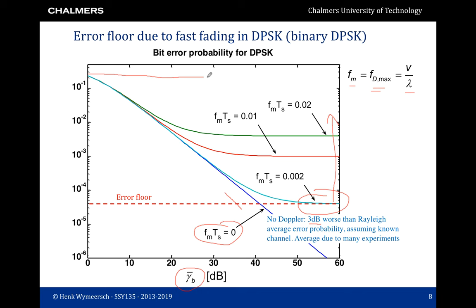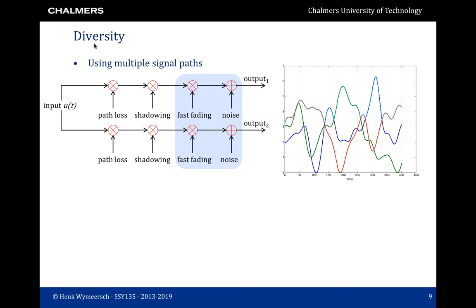We are now ready to start the topic of this lecture: diversity. In diversity, we send the same input signal U of T over multiple signal paths towards the receiver. Each signal path will have the same path loss and shadowing, but can have different fast fading and independent noise. This leads to multiple outputs that should be treated properly by the receiver. The figure on the right shows, for three channels, the evolution of the SNR as a function of time. Each channel can have large fluctuations, but the maximum of the three has much less fluctuation and thus provides better performance.